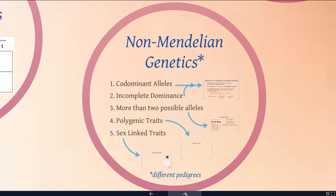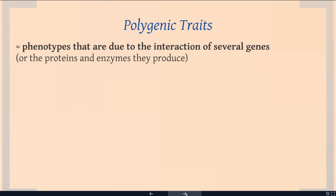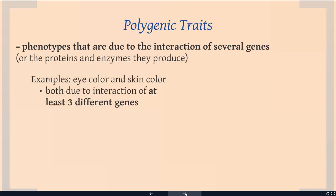Our next kind of non-Mendelian genetics are polygenic traits. Poly means many, and these are phenotypes or traits that are due to the interaction of several genes. What we mean is the different enzymes that those different genes produce are all interacting to create one single phenotype. Eye color and skin color are good examples — they're not due to the interaction of just a couple alleles, but due to the interaction of several alleles across several genes.